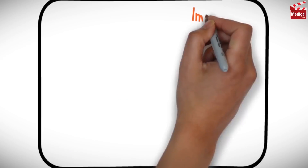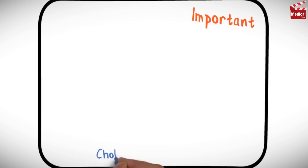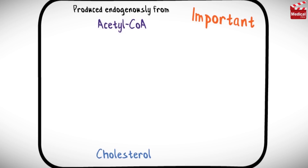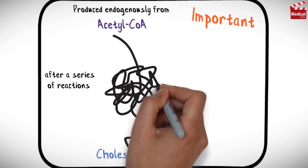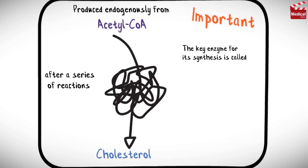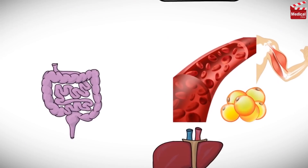Very important information we should know is that cholesterol is produced endogenously from acetyl-CoA after a series of reactions, and the key enzyme for its synthesis is called HMG-CoA reductase. So let's see the journey and functions of lipoproteins.